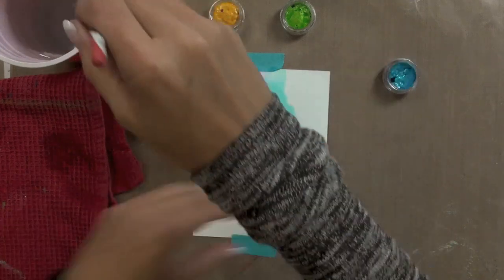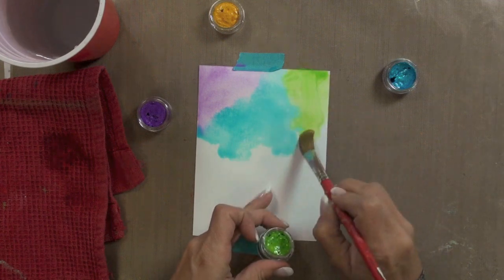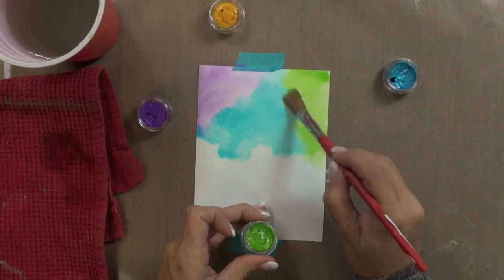I wanted it to be larger than the size of my die. I taped it to my nonstick craft sheet, spritzed it with some water, and then used a mop style brush to start applying my color.